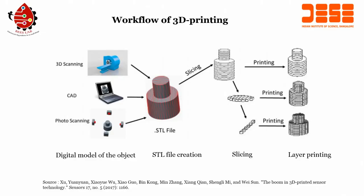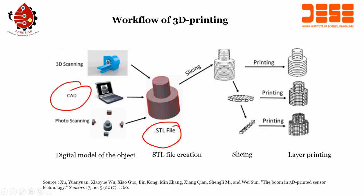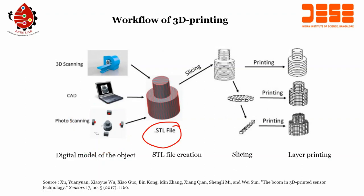Let us look at the workflow of 3D printing. First, you can do 3D scanning to generate a STL file, which is used for the printing purpose. Or you can design your own model using CAD, or you can do photo scanning — take a photo and make a STL file. You prepare the STL file and then there is slicing and layer printing.